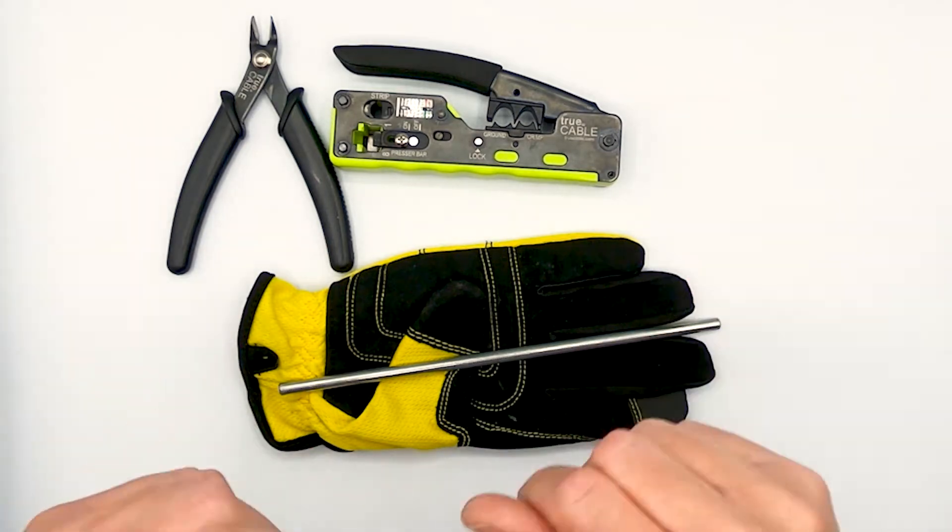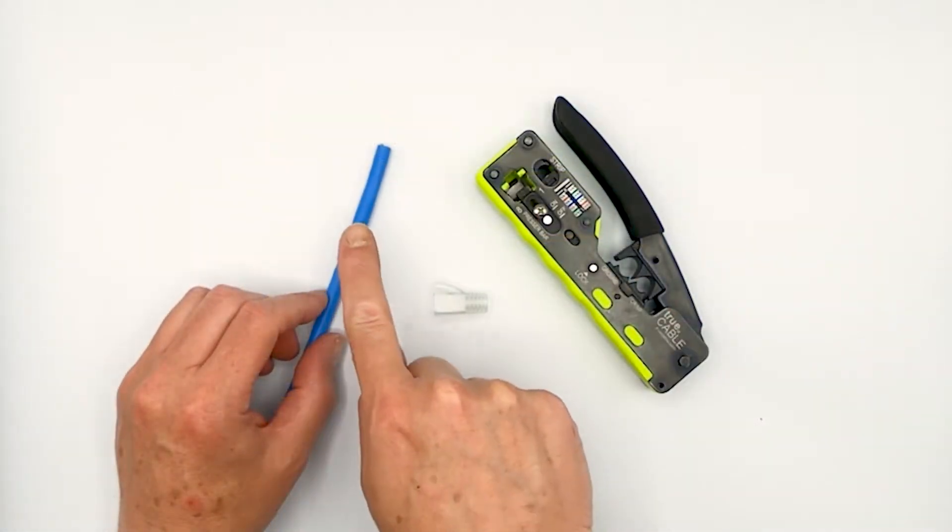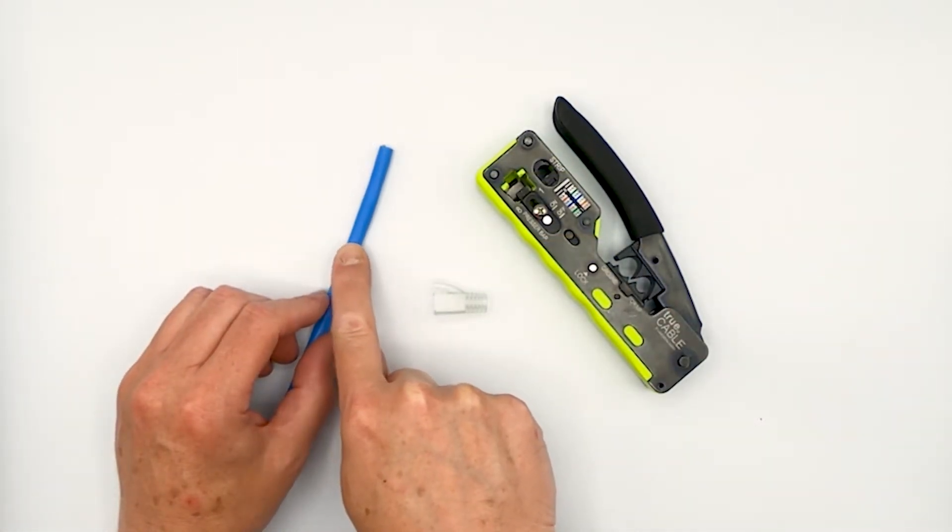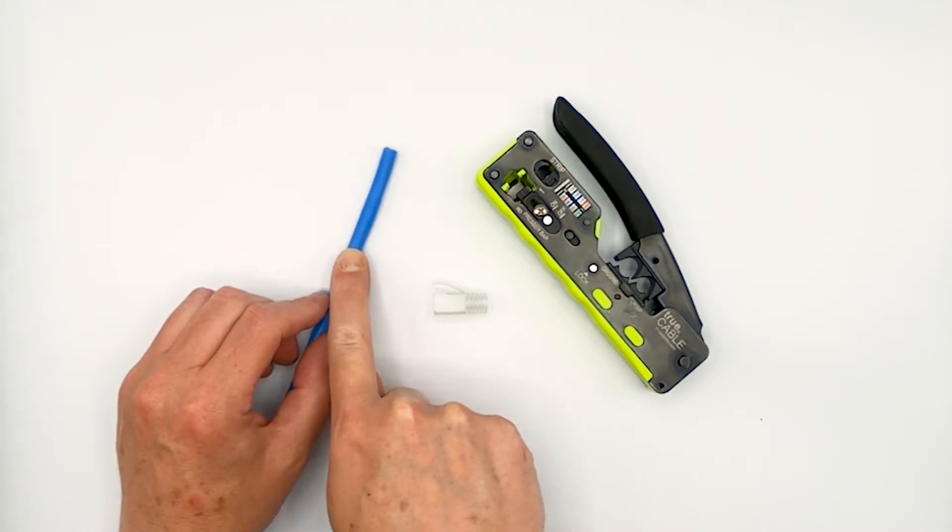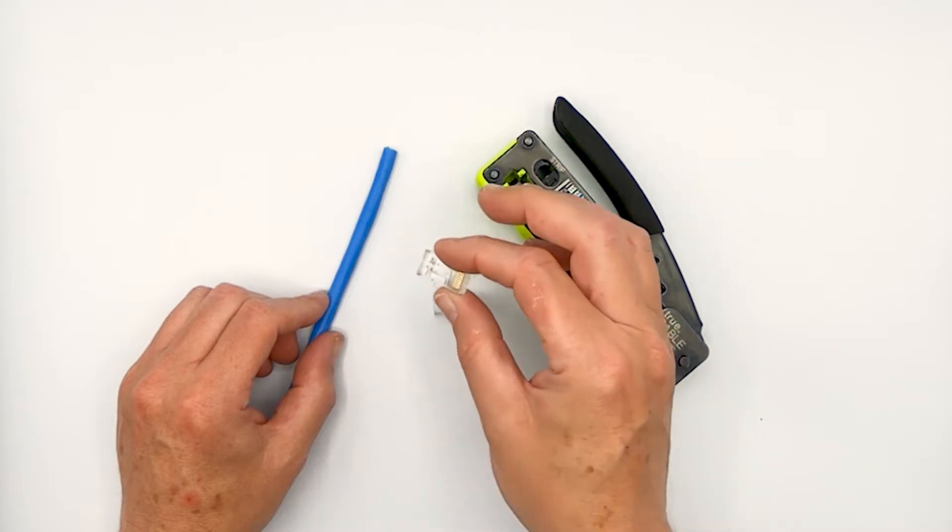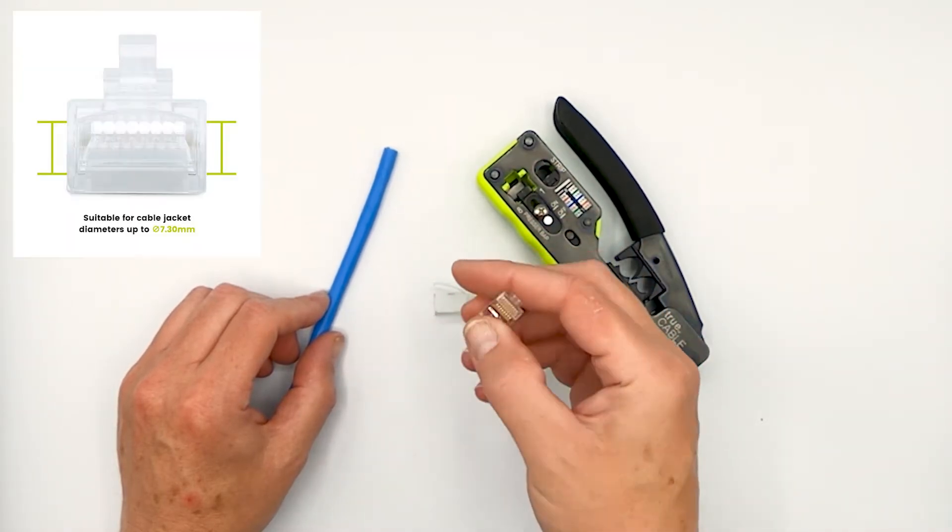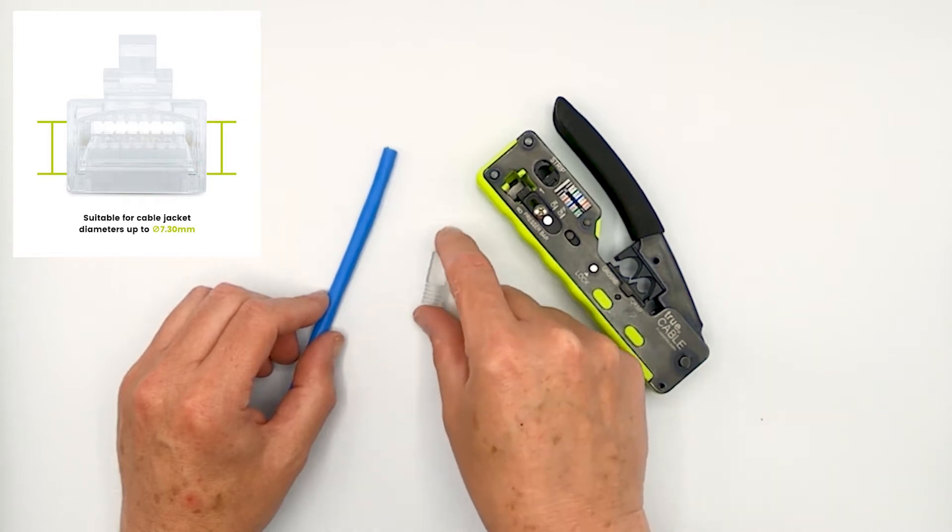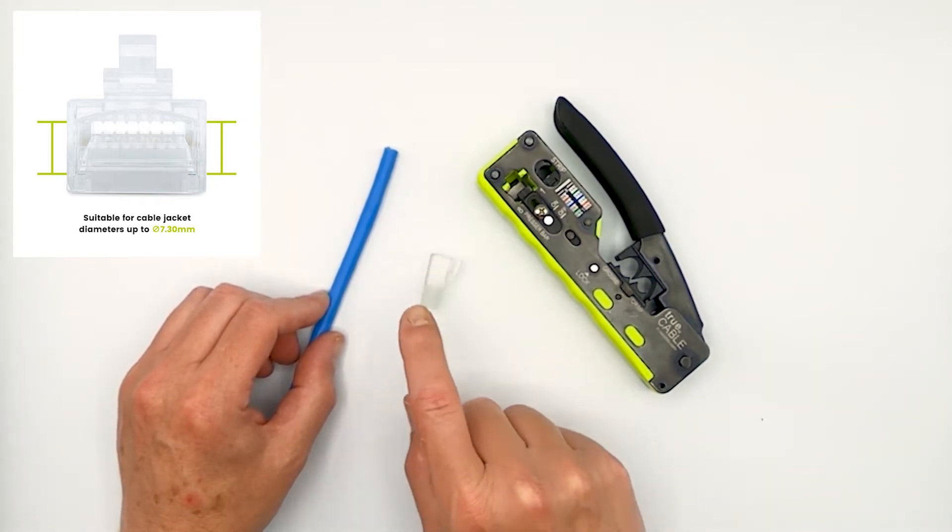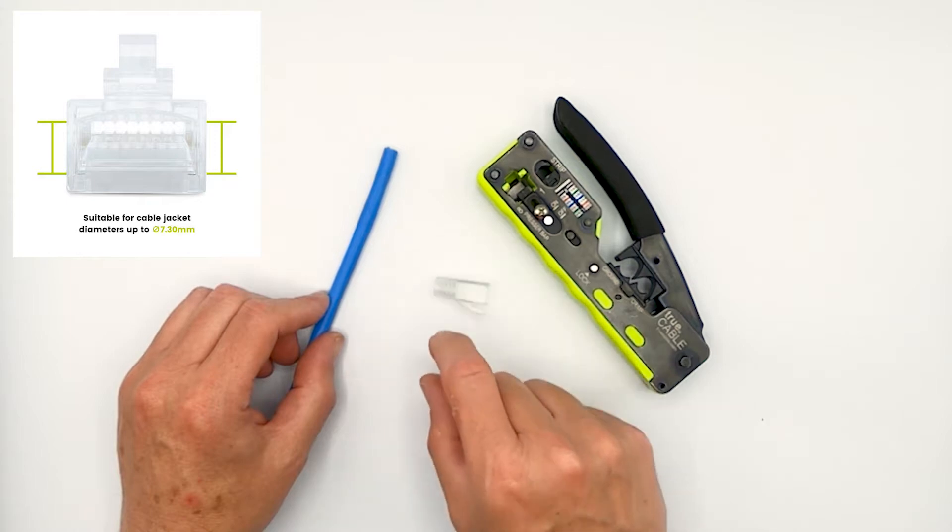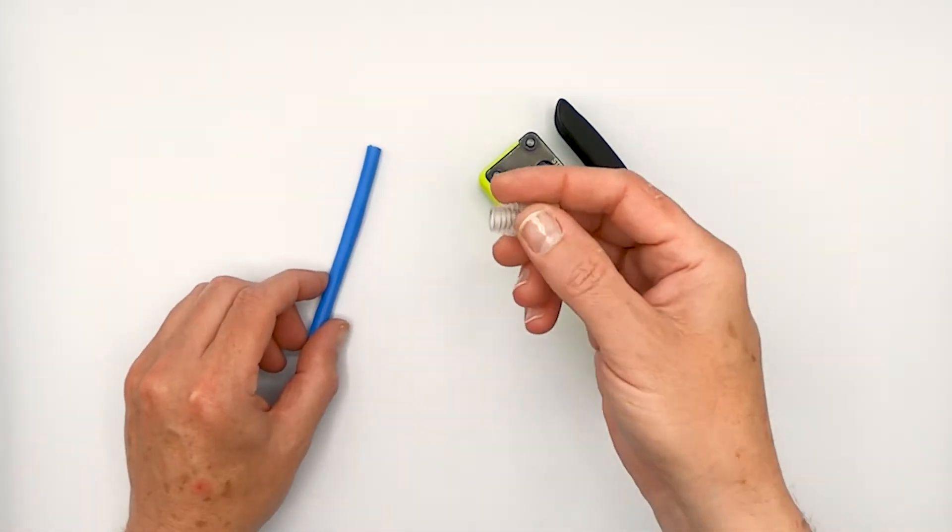Okay, so with the tools out of the way, let's go ahead and get some plugs on. We're going to be using Category 6A riser unshielded cable. We're going to be using a Category 6 slash 6A unshielded pass-through plug. And as a bonus,